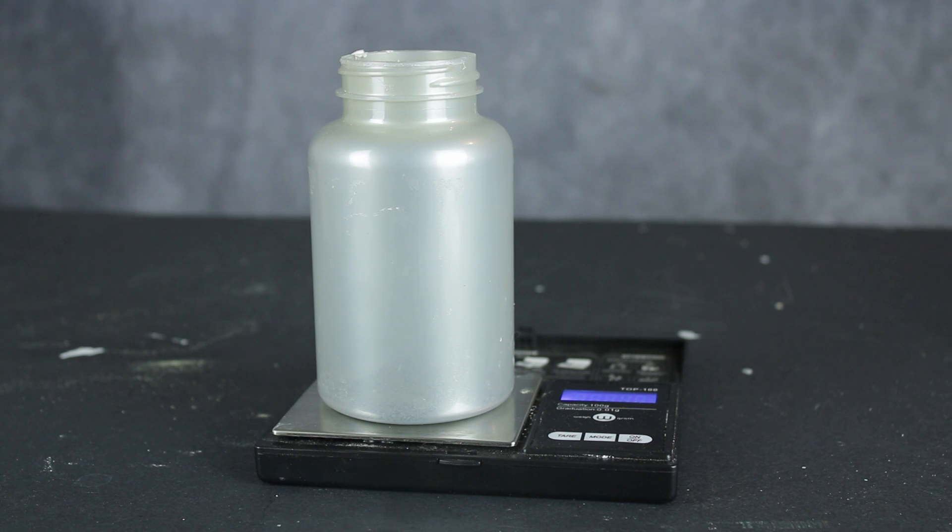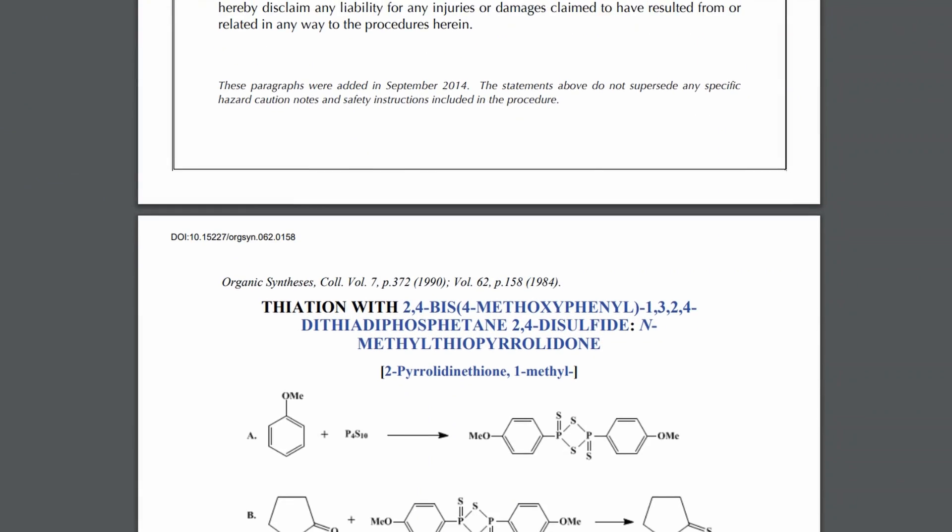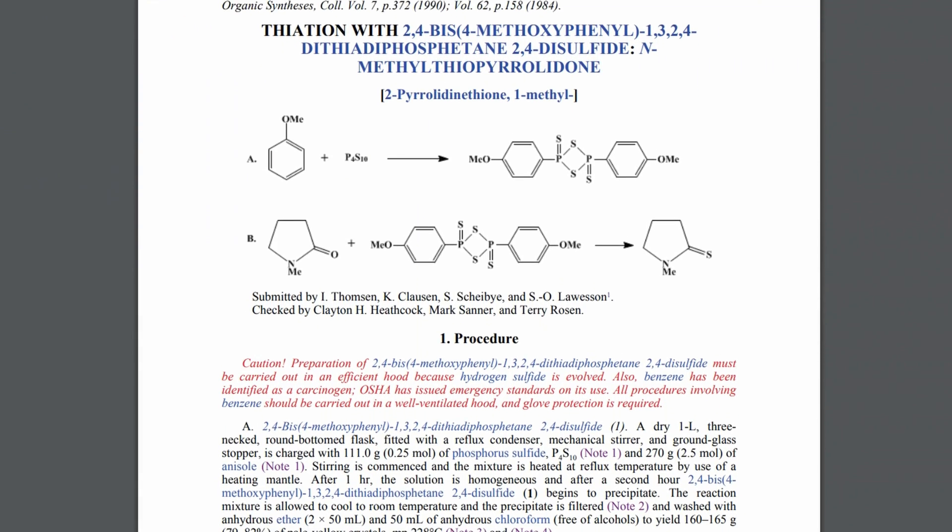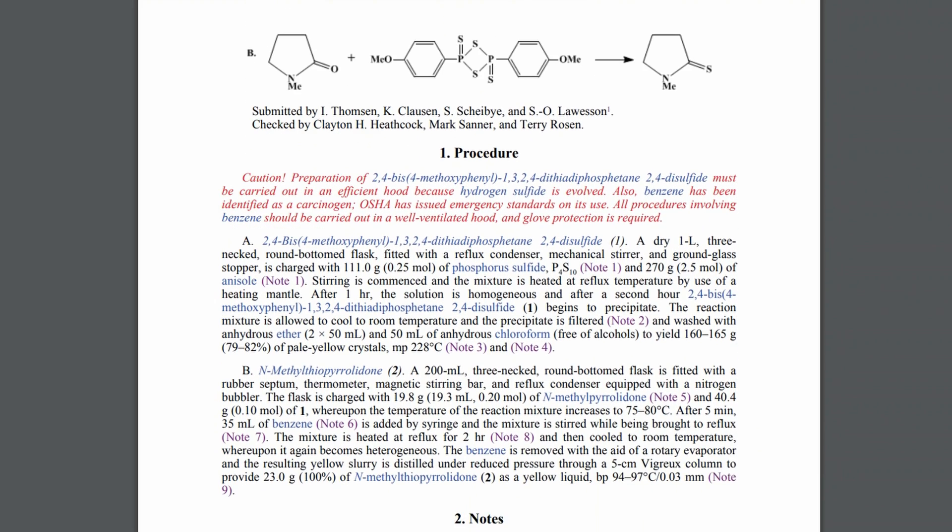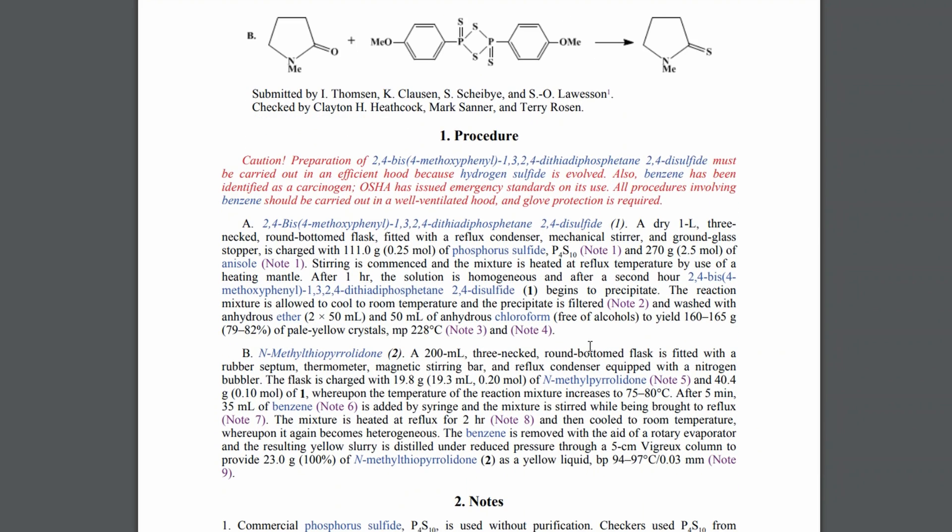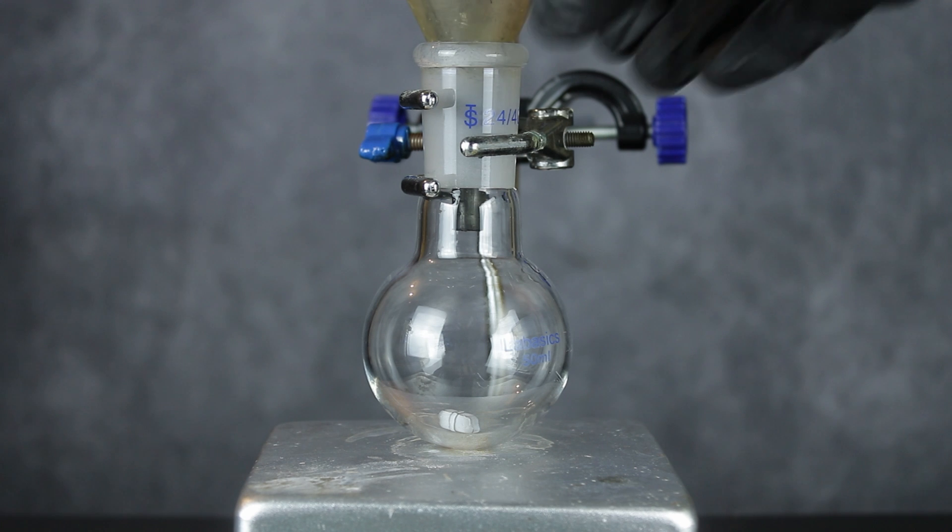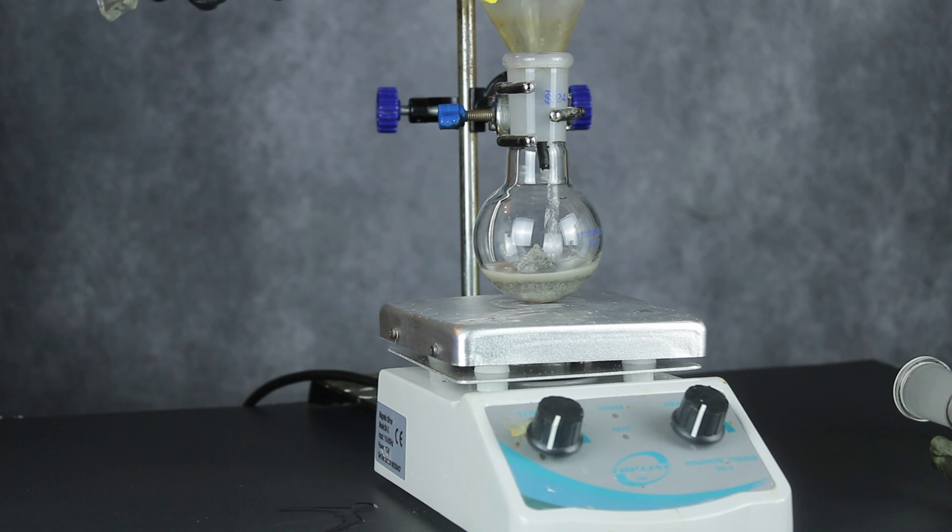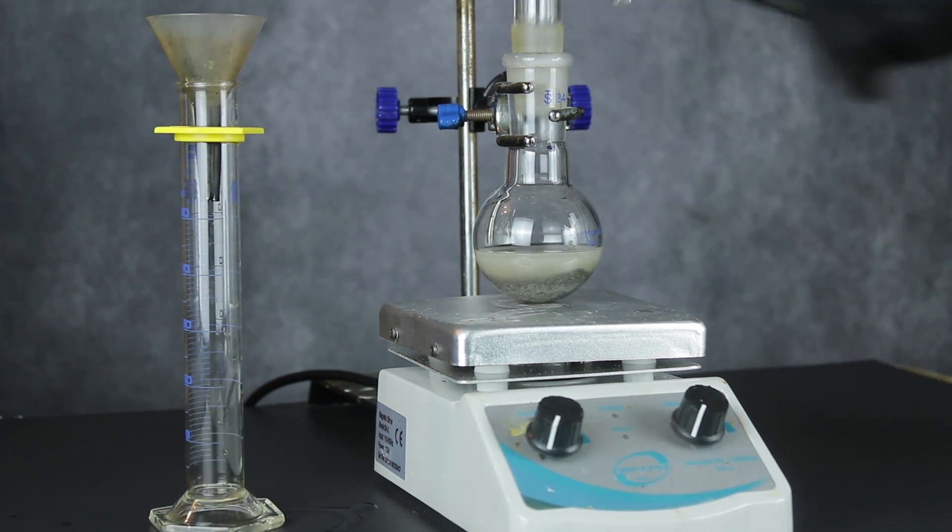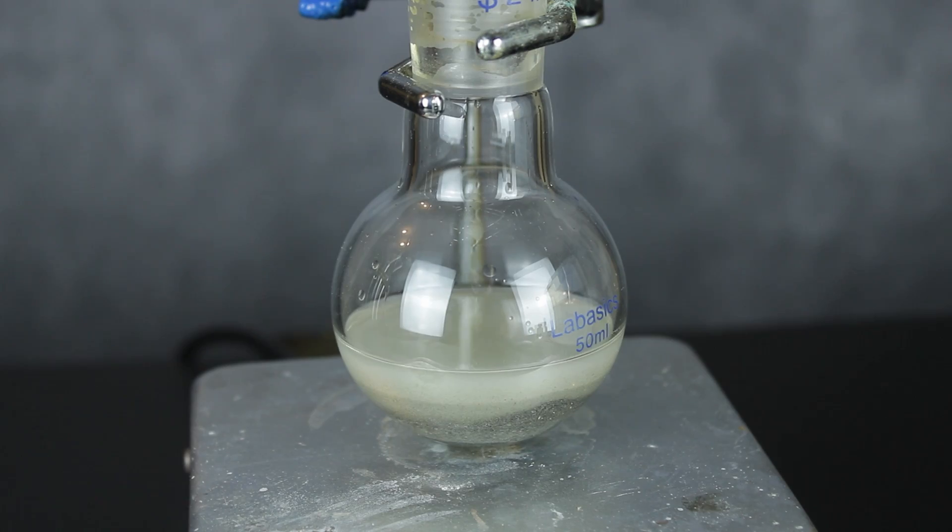So now that I had the pentasulfide, the next step was to add to the anisole and convert it to Lawson's reagent. To do this, I decided to follow the original procedure provided by Dr. Lawson himself, which told me that I needed 25.5 mils of anisole for the amount of pentasulfide I had. To my 50 milliliter round bottom flask, I added the 10.45 grams of phosphorus pentasulfide, followed by the required amount of anisole. Then a reflux condenser was connected, stirring was commenced, and I moved everything outside for ventilation.